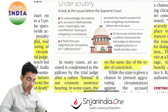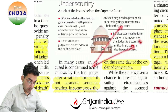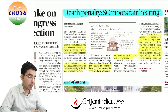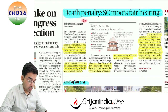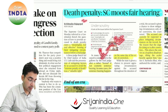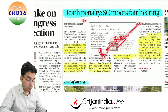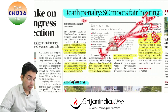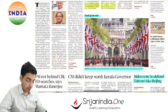Death penalty hona chahiye ya nahi hona chahiye — pro and against dono ke taraf kaafi sound arguments hain. Ispeh hum over the period of time ek opinion banayenge. But the idea is ki jo punishment hai, punishment kabhi bhi revenge ke liye nahi diya jaata. Humaara koi bhi kaam revenge-driven nahi hota. Jab hum punishment dete hain toh teen reasons hote hain: justice, reform, aur deterrence. This is the way forward.